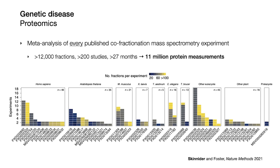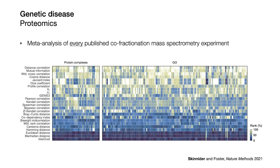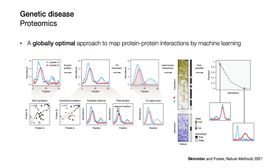When we submitted this dataset to PRIDE, the main repository for proteomics data, they told us they were pretty sure it was the largest proteomic dataset in existence. I used this enormous dataset to figure out the optimal way to analyze co-fractionation data. Using known protein interactions as a ground truth, I benchmarked every individual step of the computational analysis pipeline, and created a package that implemented the globally optimal approach to identifying protein interactions by machine learning on co-fractionation data.